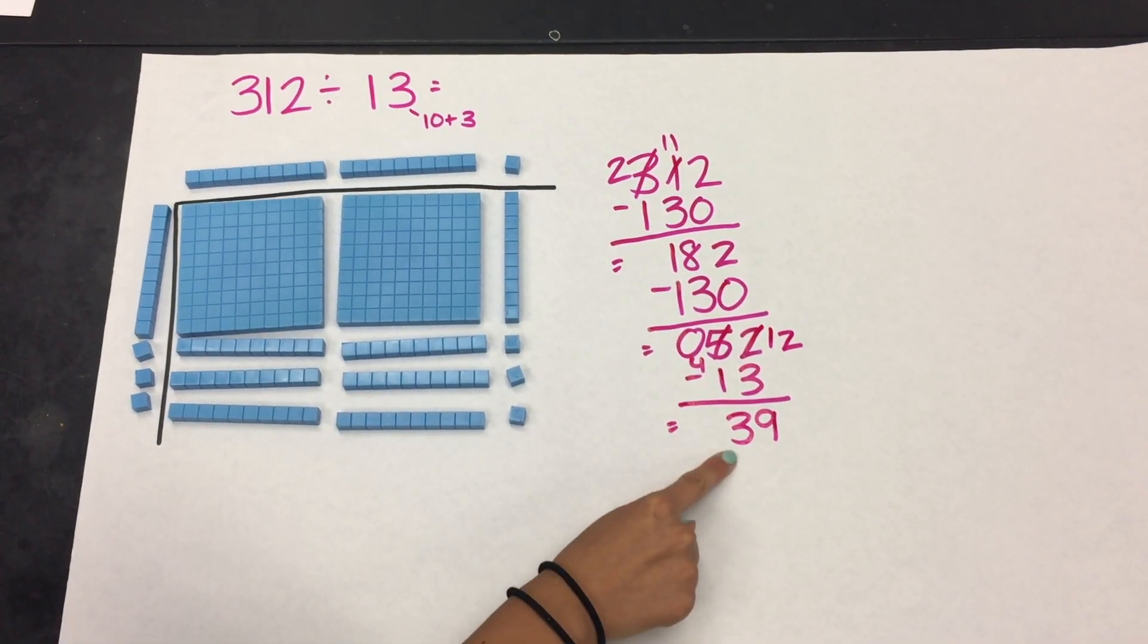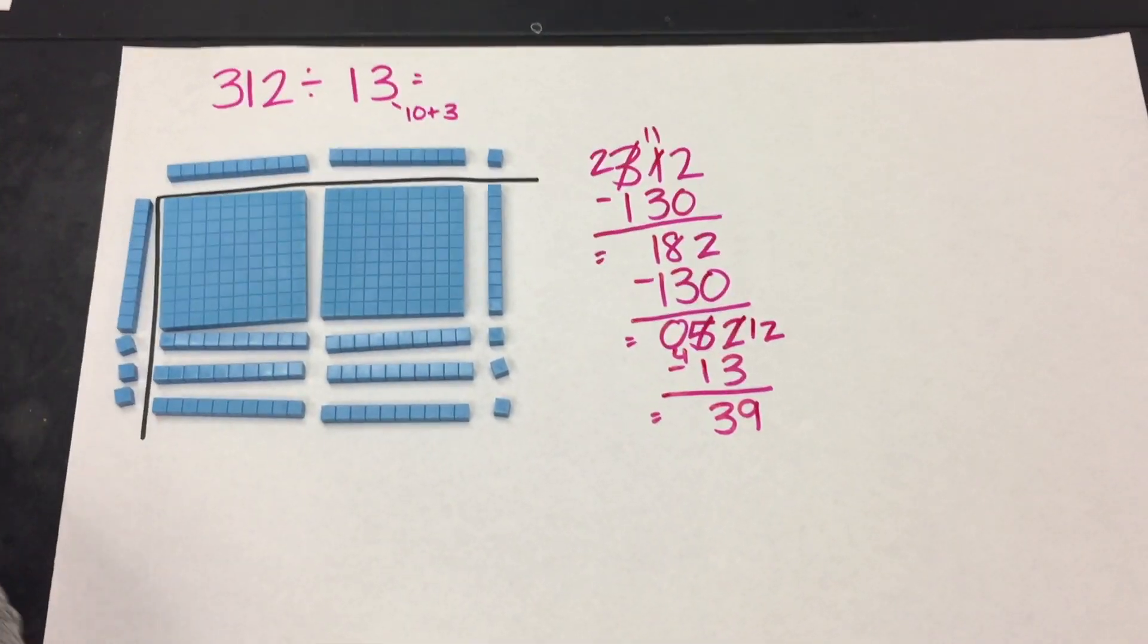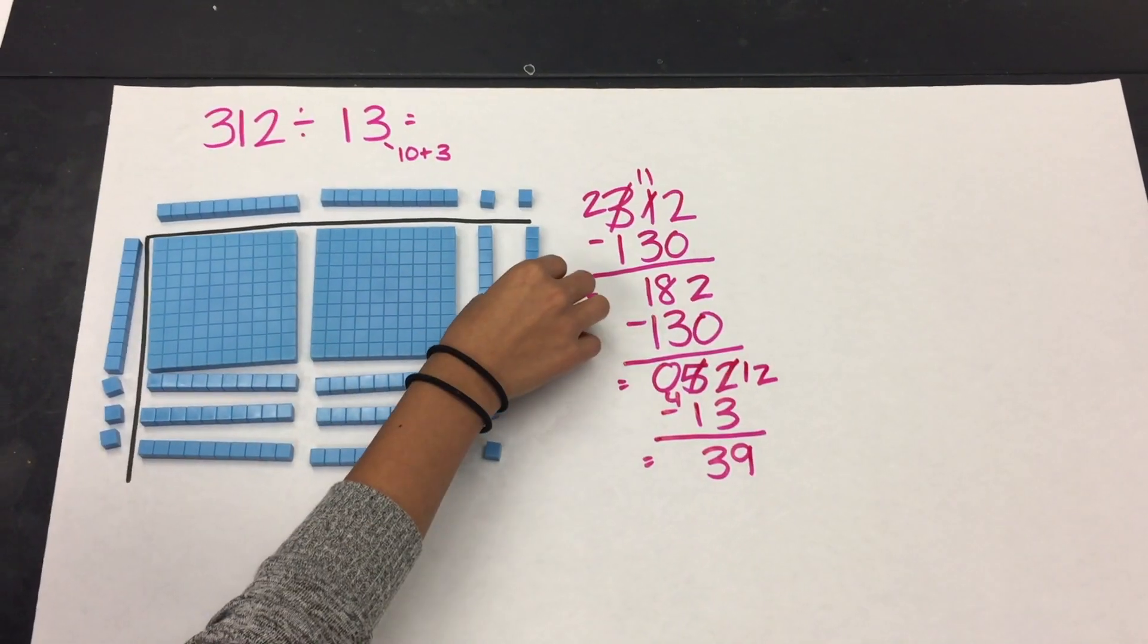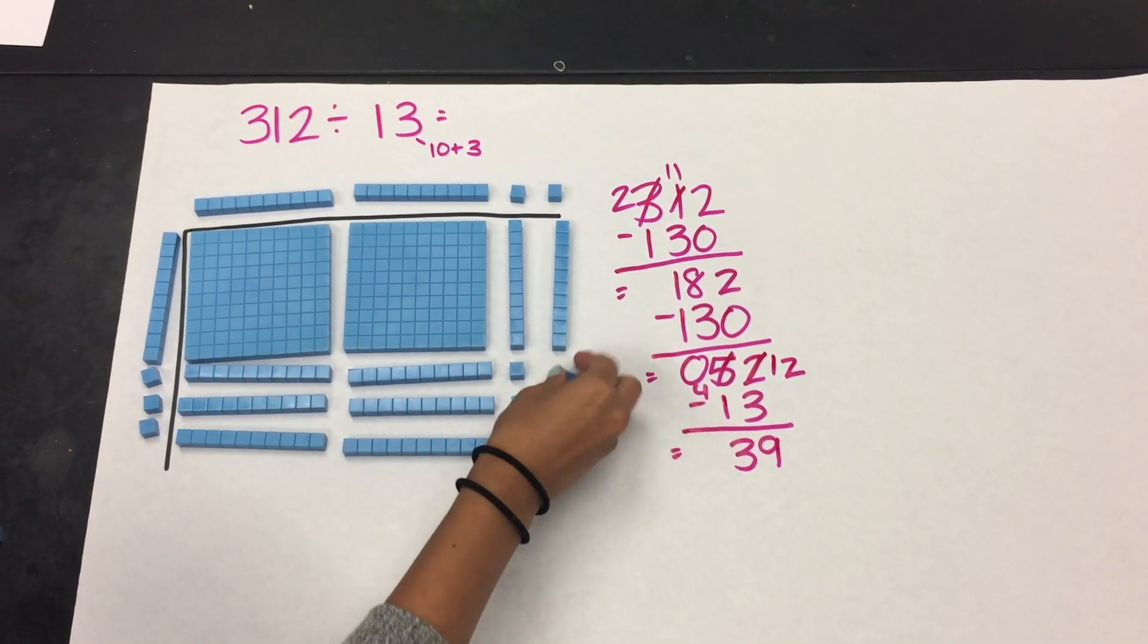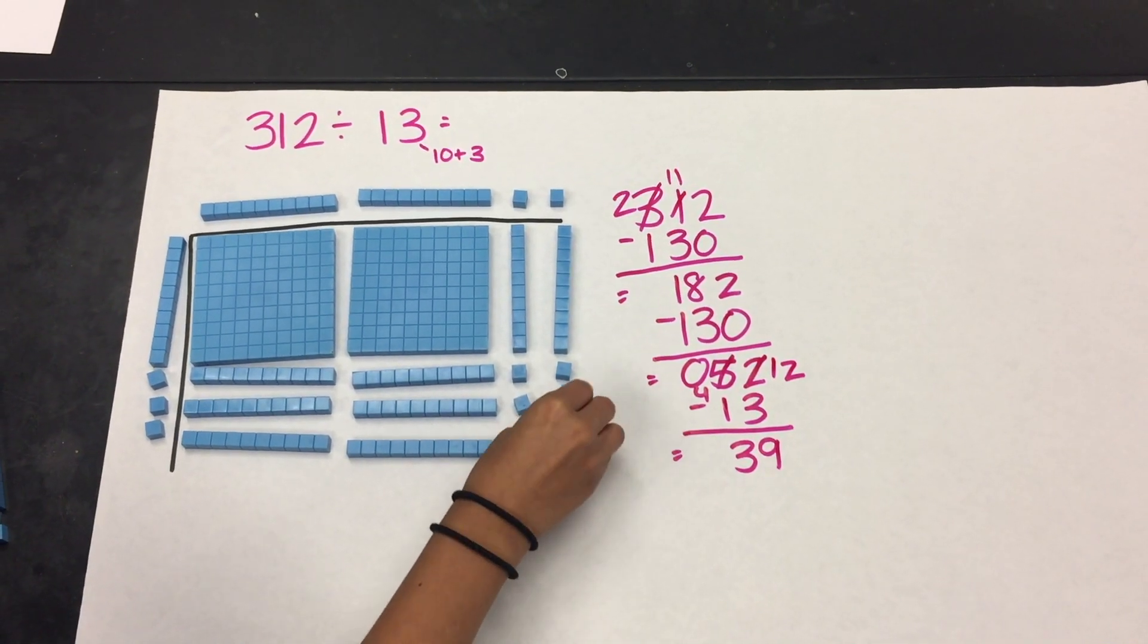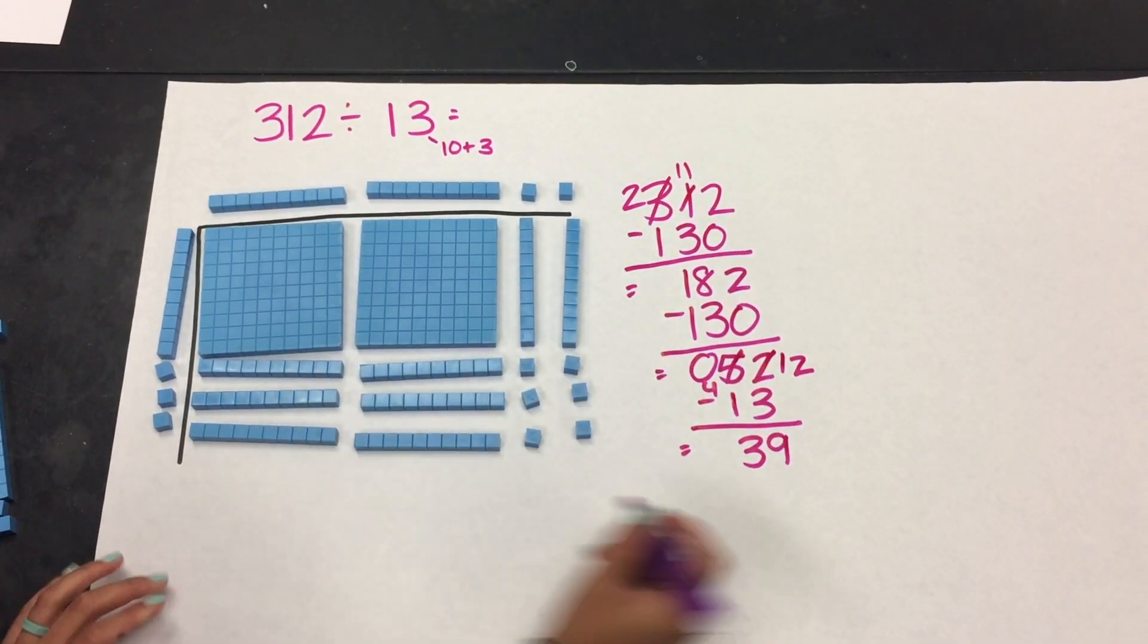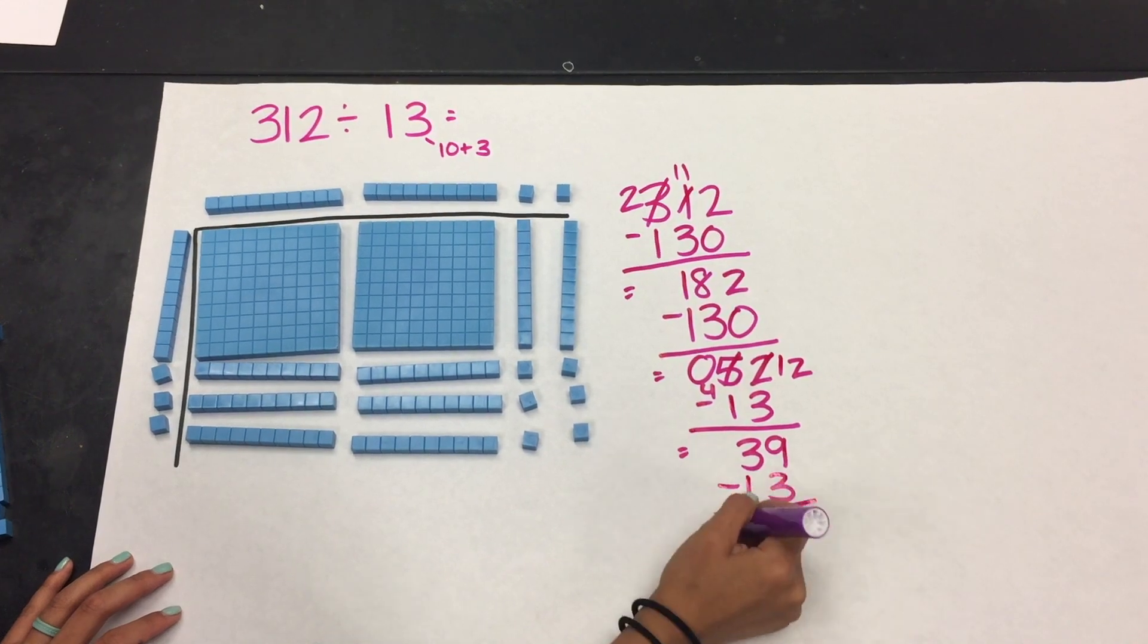Again, I don't have enough to put 10, but I can continue putting down 1s as my quotient. And I know that this column should look exactly like the column that I had just built. So I have another 13 that I have placed for my dividend.